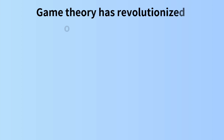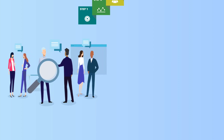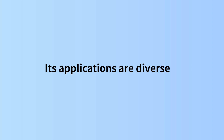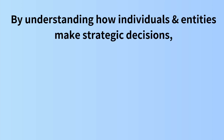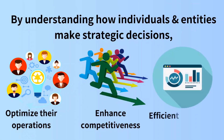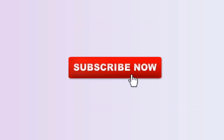Conclusion. Game theory has revolutionized operations research by providing a systematic framework for analyzing strategic interactions in decision-making processes. Its applications are diverse, spanning industries from supply chain management to healthcare. By understanding how individuals and entities make strategic decisions, organizations can optimize their operations, enhance competitiveness, and achieve more efficient outcomes. If you want to read it in detail or download the PDF, go through the link in the description, and don't forget to subscribe to Education Leaves.